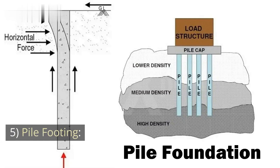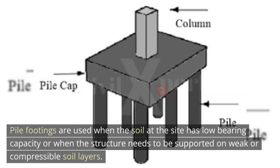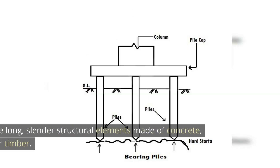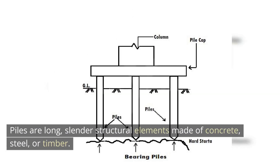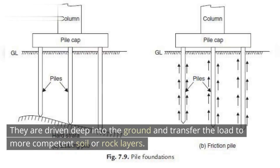5. Pile Footing: Pile footings are used when the soil at the site has low bearing capacity or when the structure needs to be supported on weak or compressible soil layers. Piles are long, slender structural elements made of concrete, steel, or timber. They are driven deep into the ground and transfer the load to more competent soil or rock layers.